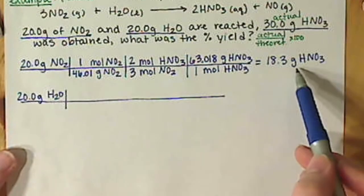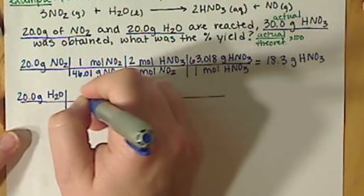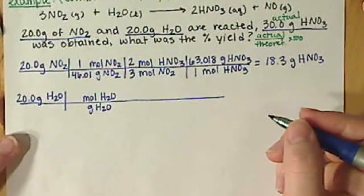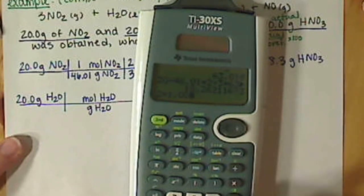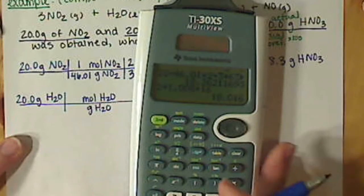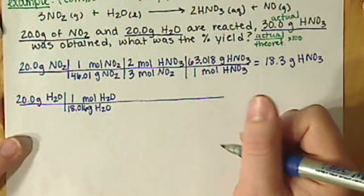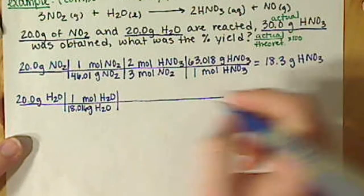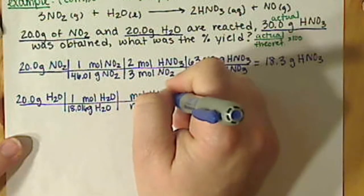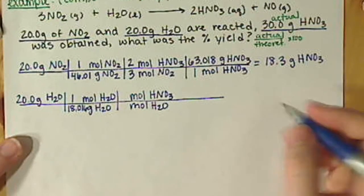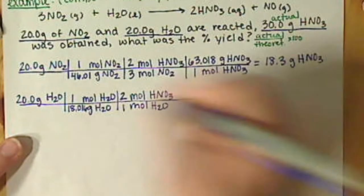Alright, so that's our first calculation. We have to do the similar calculation now with our water. So we want to go grams of water to moles of water. Use our molar mass. We have 2 hydrogens times 1.008 plus our oxygen, so we have 18.016. And remember that's per one mole. Molar mass is always per one mole. Now we go moles of water to moles of nitric acid. Remember we want to stick with the same product. So we have one mole, that's from our stoichiometry. And we have 2 moles of nitric acid.